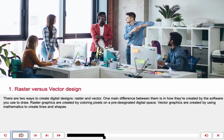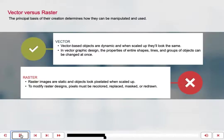Number one: raster versus vector design. There are two ways to create digital designs — raster and vector. One main difference between them is how they're created by the software you use to draw. Raster graphics are created by coloring pixels on a pre-designated digital space. Vector graphics are created by using mathematics to create lines and shapes. So what's the difference? The principal basis of their creation determines how they can be manipulated and used.